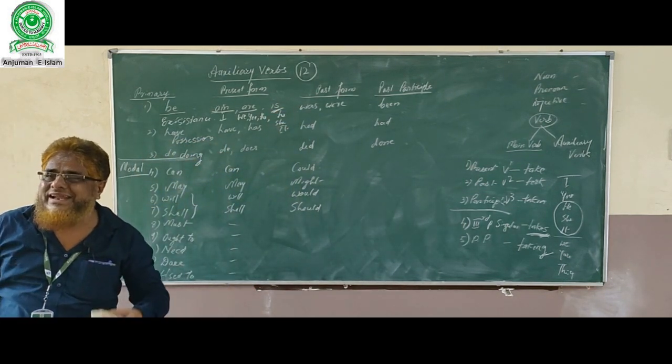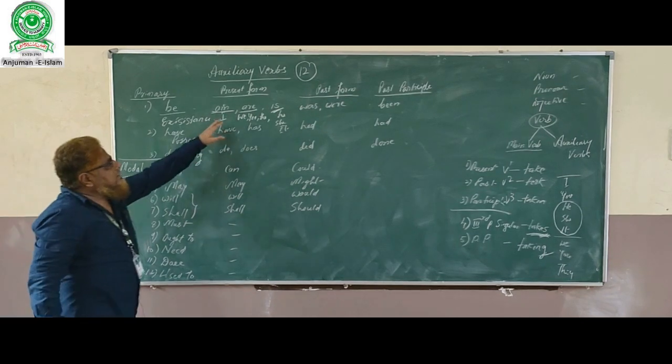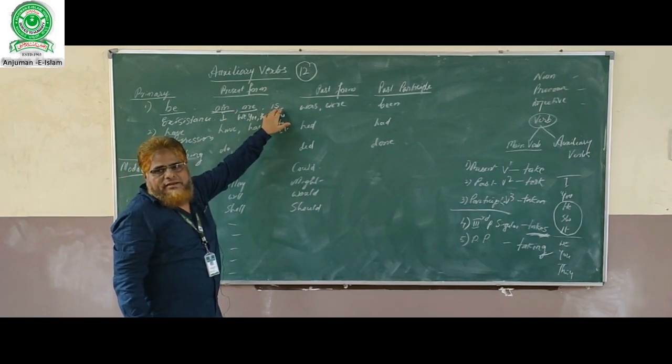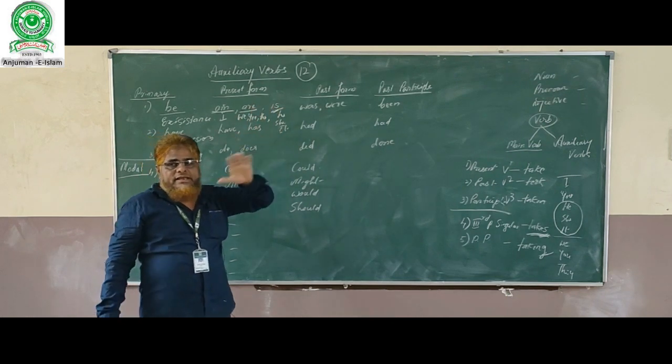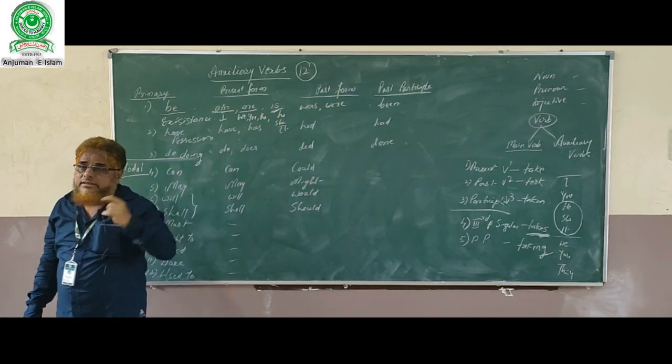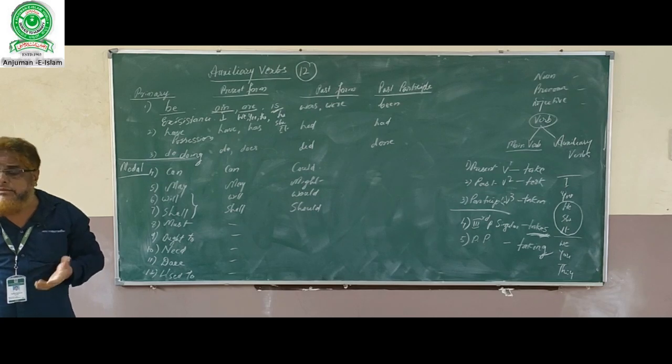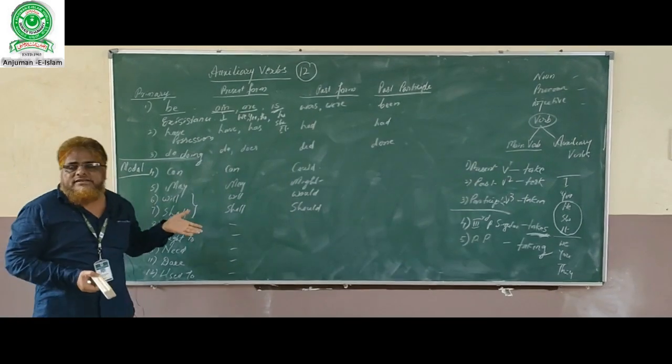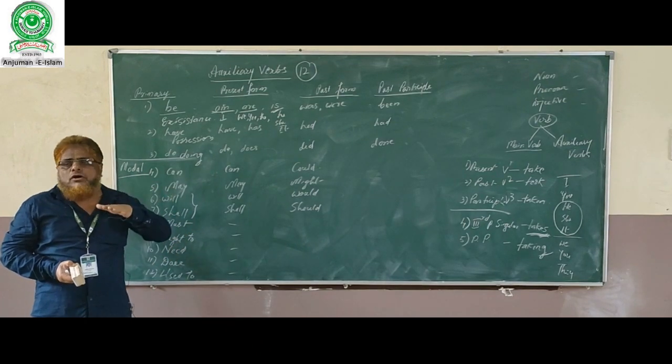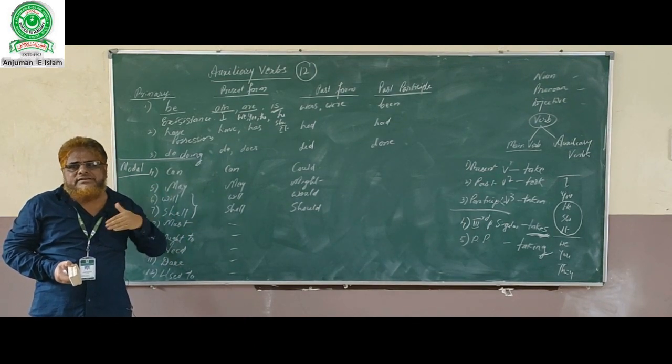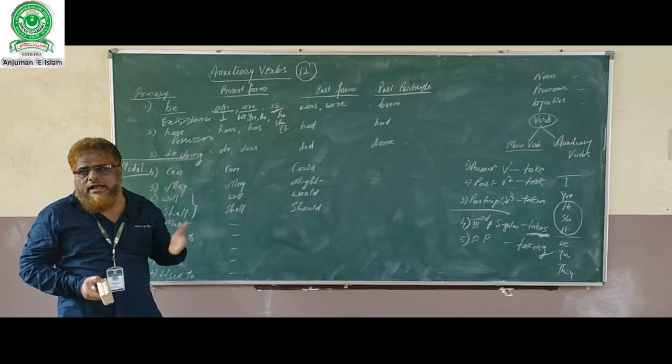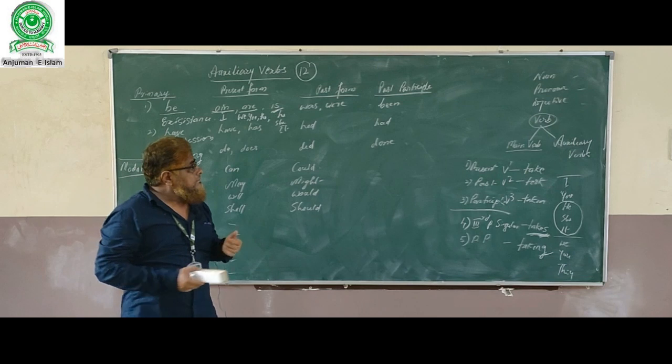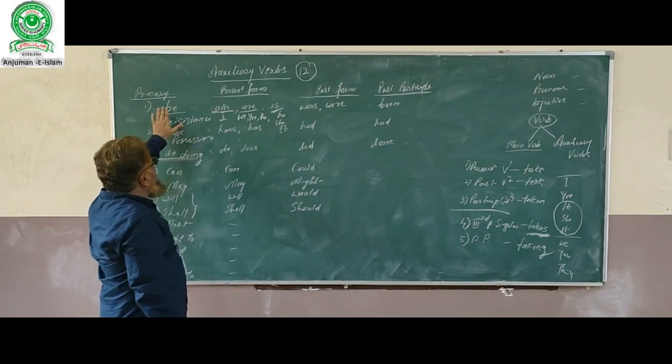I am a teacher. You are a student. He is my friend. See, here there are no main verbs, but these auxiliaries are acting as main verbs. But many times, 90% of the time, both auxiliary and main verbs are there in the sentence. 'I am teaching.' So here, auxiliary is also there, main verb is also there. This is very important.